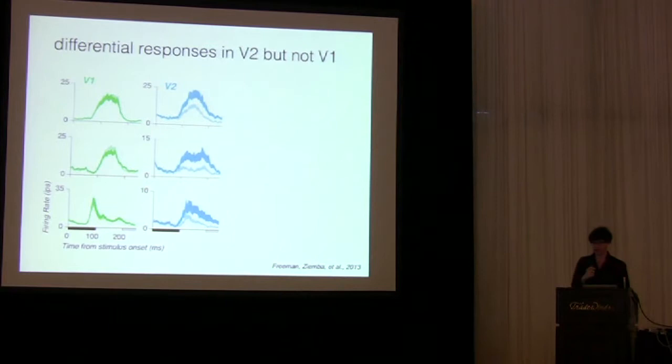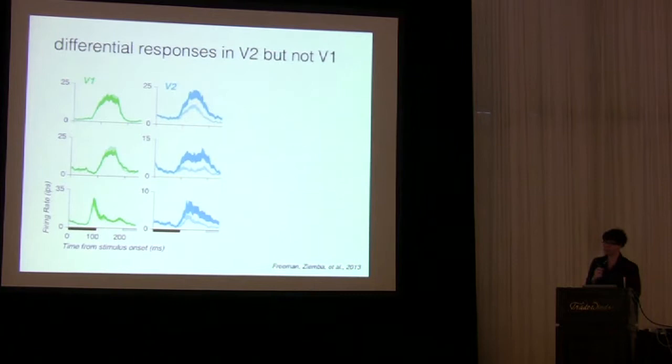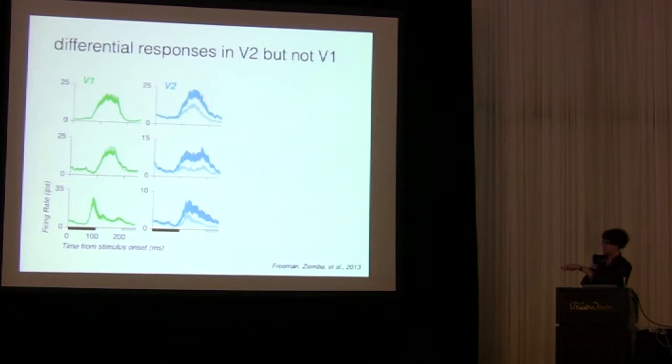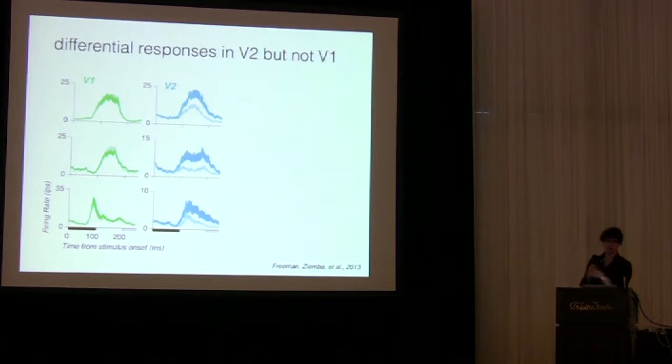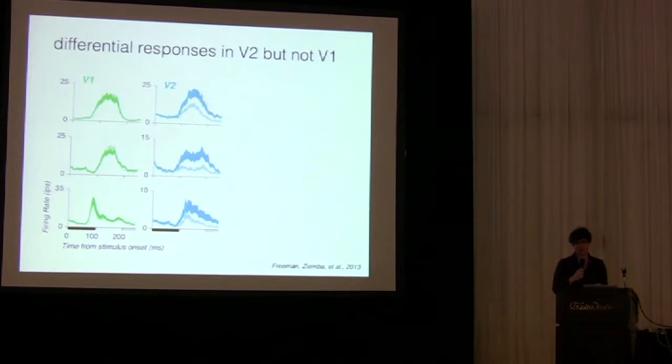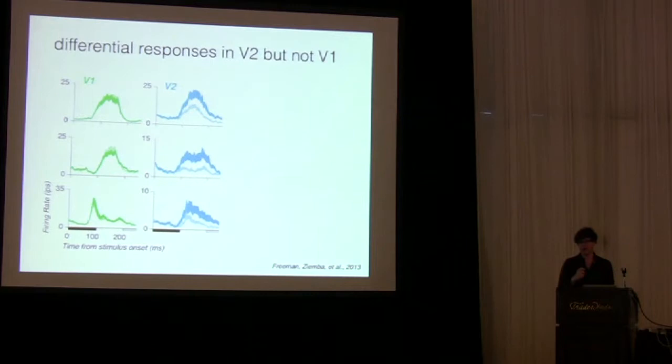and I'm showing here just three representative examples, but we found very consistently neurons in V1 reliably responded similarly to these different kinds of patterns. On the y-axis here is firing rate, on the x-axis is the time from stimulus onset. In the case of V1, the dark green are responses to the naturalistic stimuli and the light green are responses to the noise stimuli. So for V1 those responses are similar. In the case of V2 there was a robust differential response to specifically the naturalistic stimuli. And we found that this basic effect reliably differentiated responses in V2 from responses in V1 better than any previous stimuli.